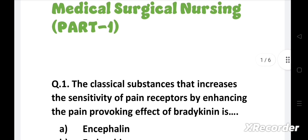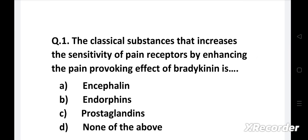Question number one: The classical substances that increases the sensitivity of pain receptors by enhancing the pain-provoking effect of bradykinin is: Option A - Encephalin, B - Endorphins, C - Prostaglandins, D - None of the above.